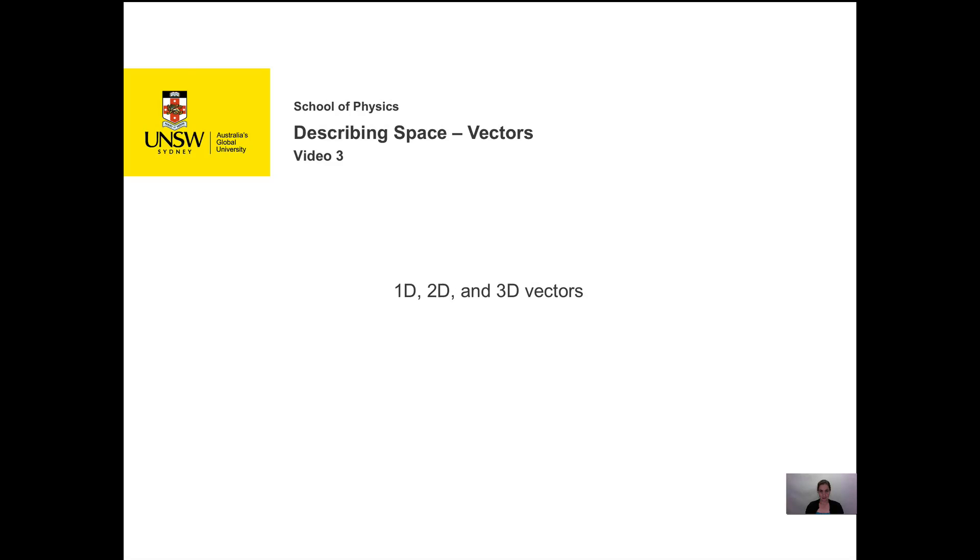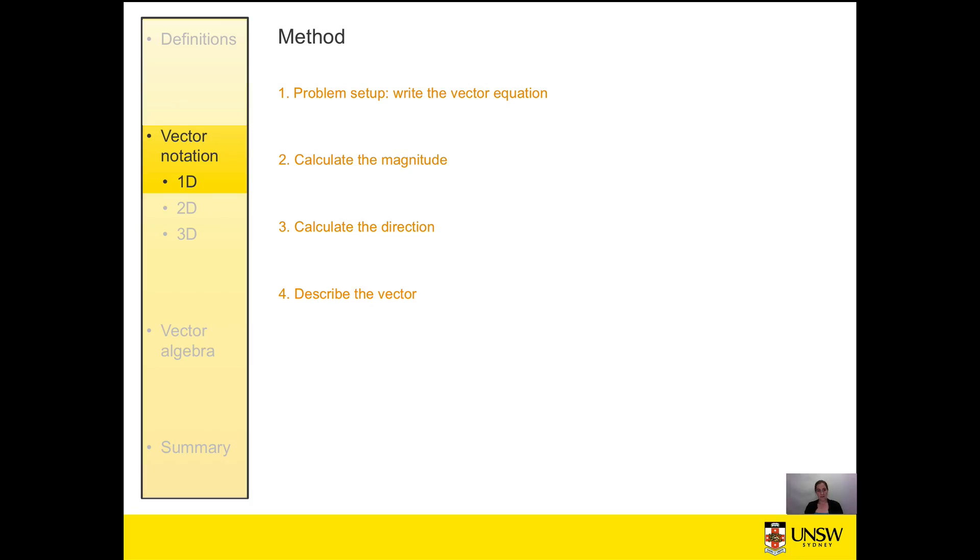To describe a vector I usually use the following four steps. Step one is the problem setup. If there's no diagram, I draw the diagram and from the diagram I then write the vector equation. This is my translation of the problem statement into a mathematical equation. Once I have the mathematical equation, I then calculate the vector magnitude and direction. And with these two components I can then describe the vector.